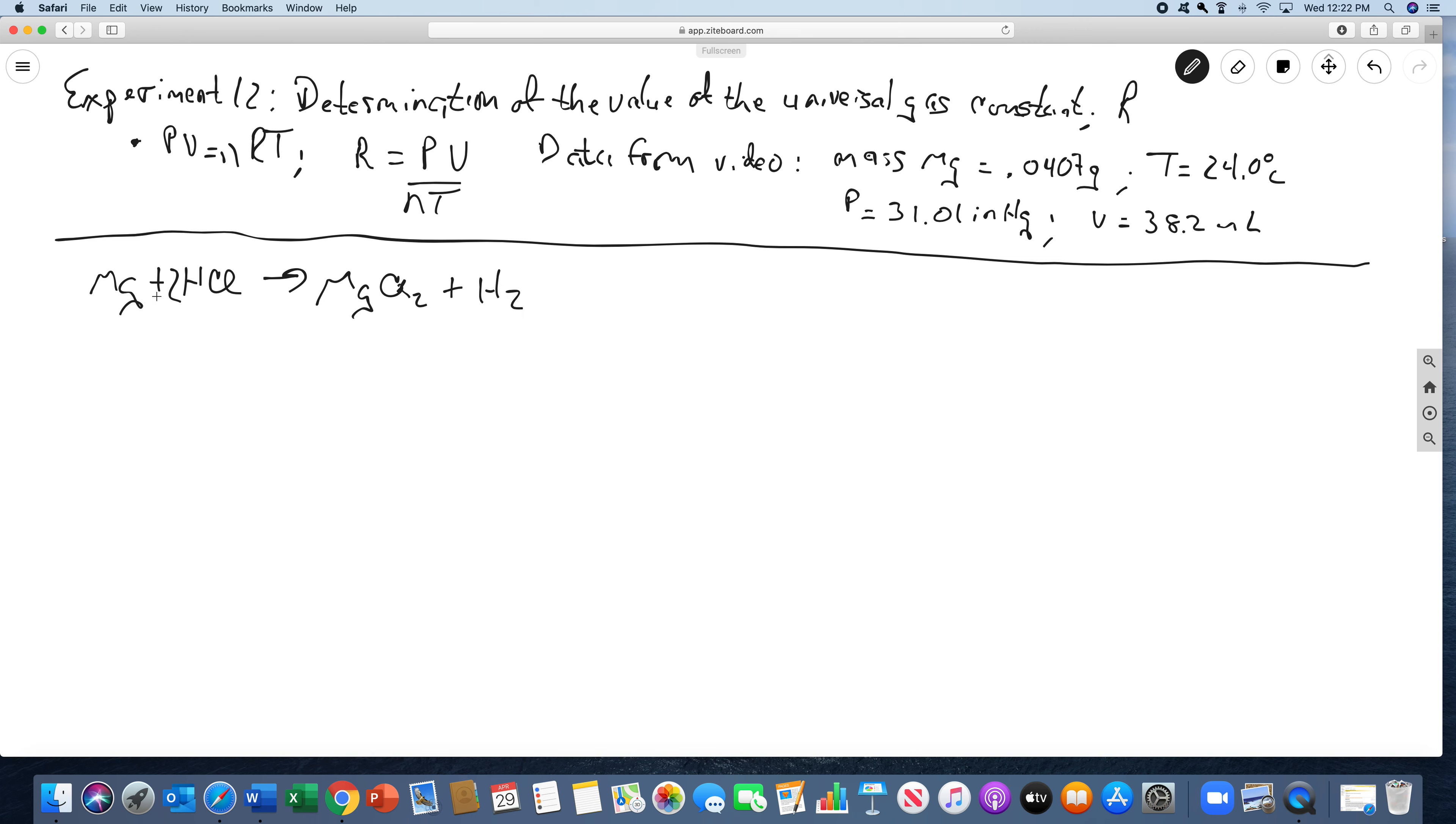You get magnesium chloride and hydrogen gas. From the mass of the magnesium, we can determine the moles of hydrogen. So there's n. We measure the pressure, volume, and temperature. So in the video,